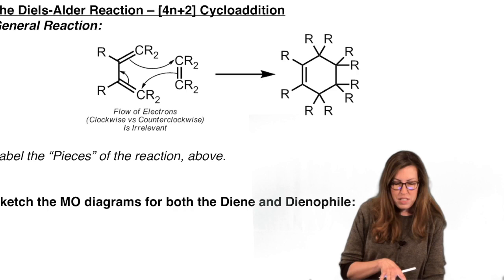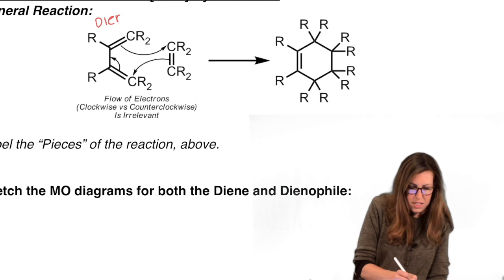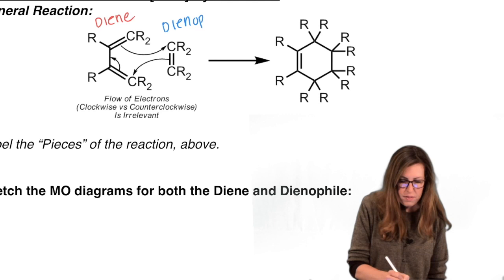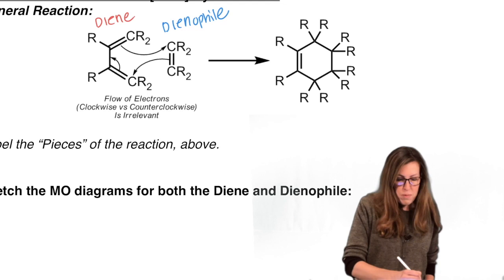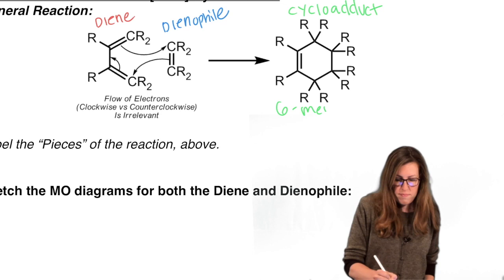Notice the pieces here. We have a diene, and we have a dienophile — that's the alkene. It loves the diene. And presumably that's why they react to form our cycloadduct, our cyclic ring. Notice we went from acyclic structures to a cyclic structure, a six-membered ring. And it also formed a carbon-carbon bond.